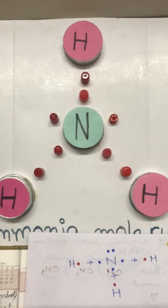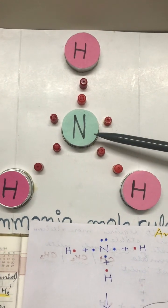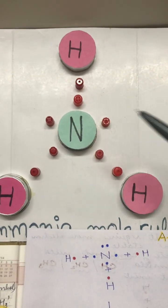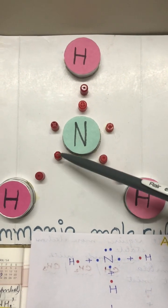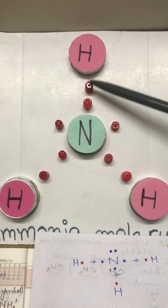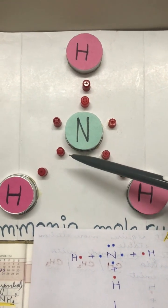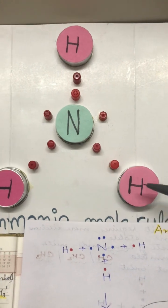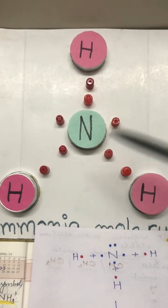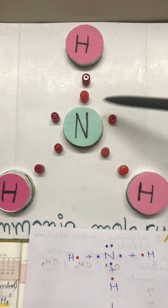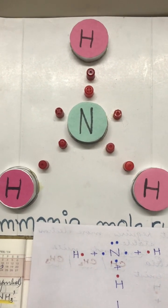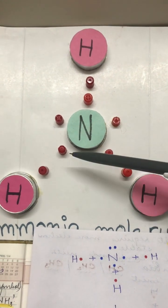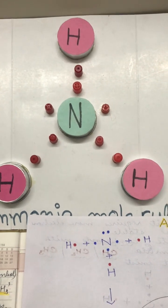The same bonding can also be represented with the help of a model. In the center is the symbol for nitrogen, and the three surrounding symbols are hydrogen atoms. Nitrogen has five valence electrons and shares one with each hydrogen atom. Each hydrogen atom completes its duplet with two electrons, and nitrogen completes its octet — counting one, two, three, four, five, six, seven, and eight electrons.